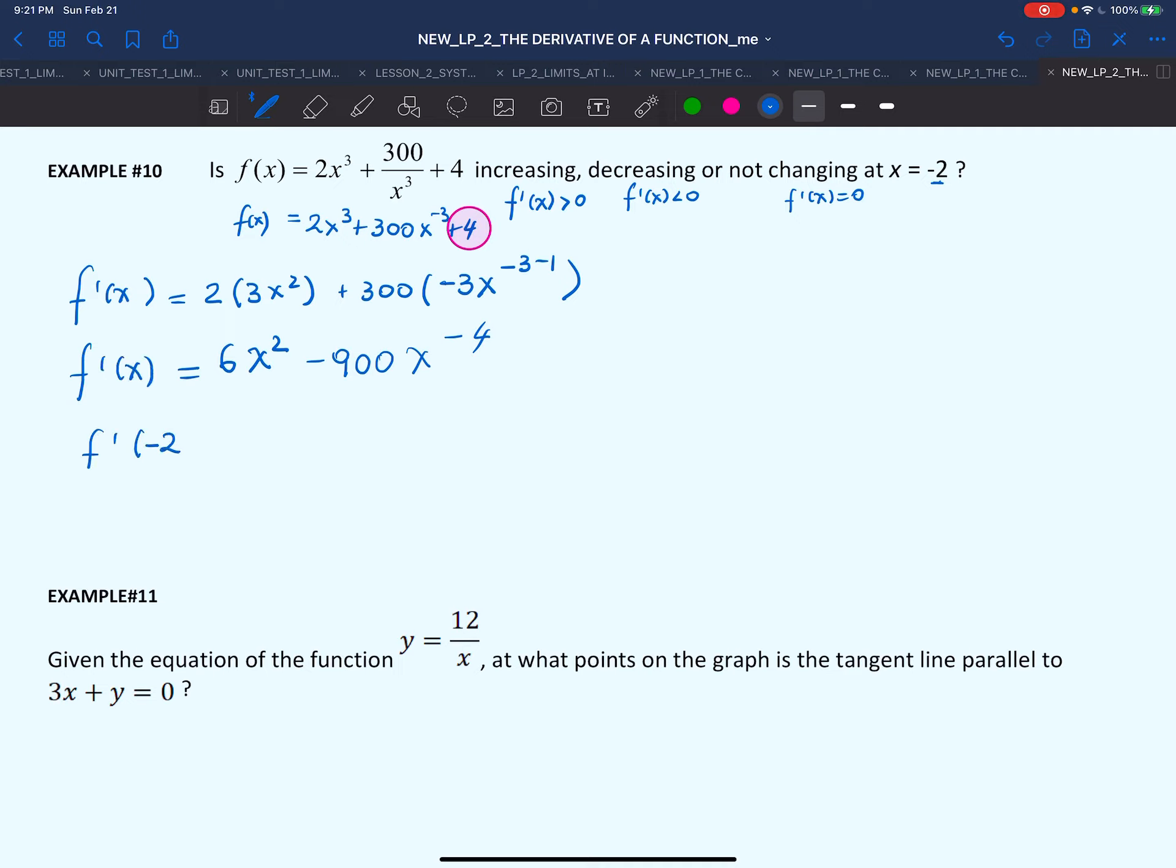If we want to evaluate the derivative at -2, then we'll say f'(-2). It would be 6 instead of x. Now we'll write (-2)² minus 900(-2)^(-4). So this will be 24 minus 900 divided by 2^4, which is 16. You can use the calculator if you wish or you can try to do this in your head.